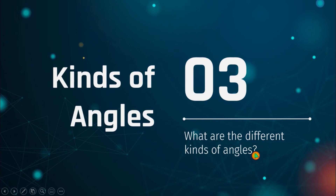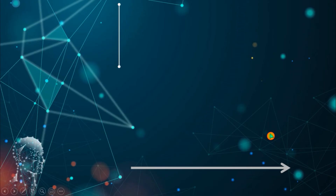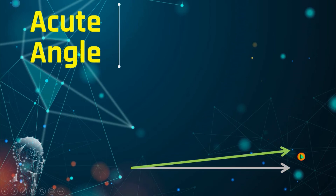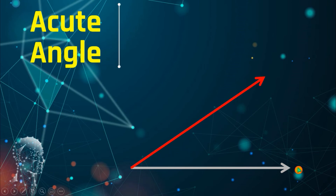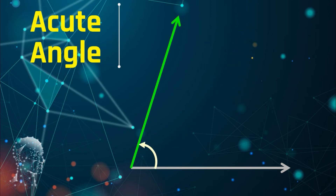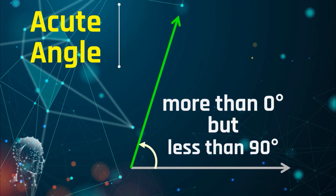During our lesson in the second quarter, I already told you there are three basic kinds of angles: acute, right, and obtuse. For today, we're going to add three more. Let us recall: an acute angle is an angle that is more than zero degrees but less than 90 degrees. So any angle between 0 and 90 — like 1 degree or 89 degrees — is an acute angle.